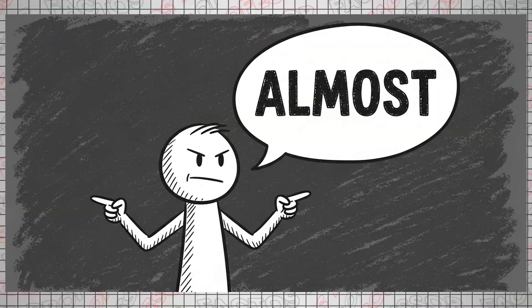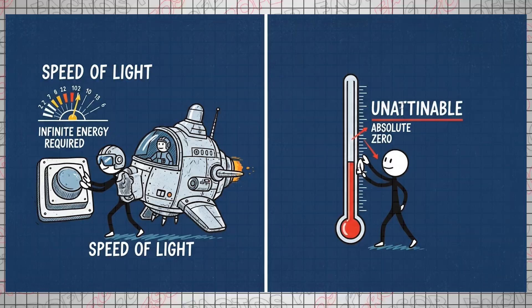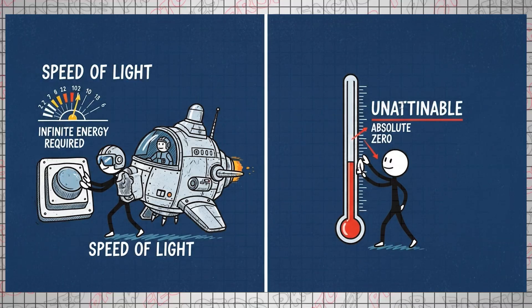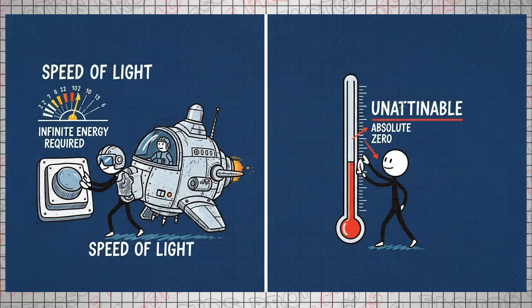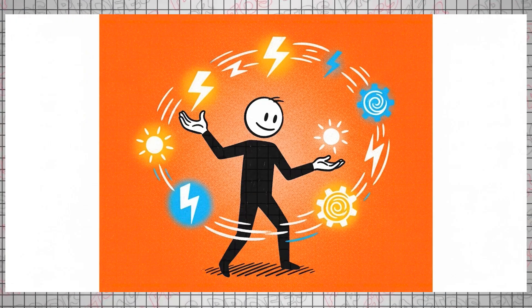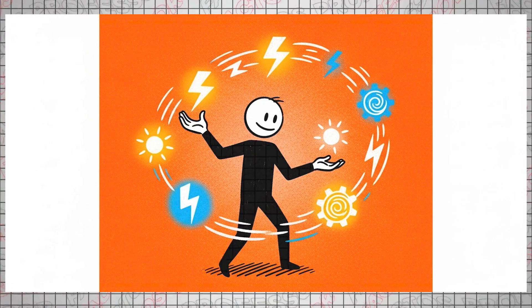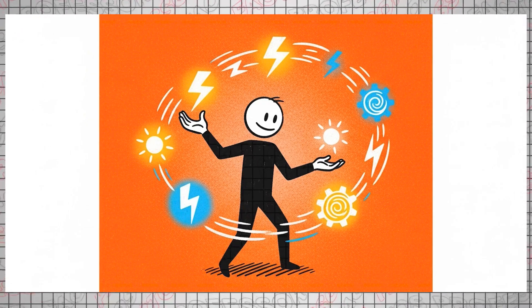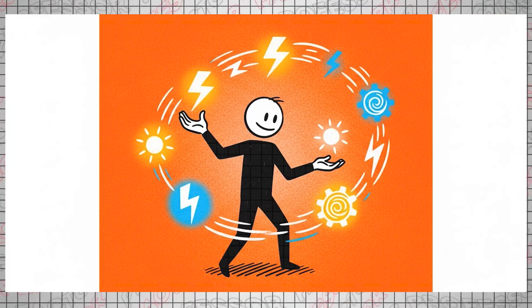Further decreasing the temperature causes the particles in the solid to vibrate less and less, until they almost stop. And it's crucial to remember those two words: almost. Just as you would need infinite energy to accelerate a cosmic battleship to the speed of light, absolute zero is simply unattainable.